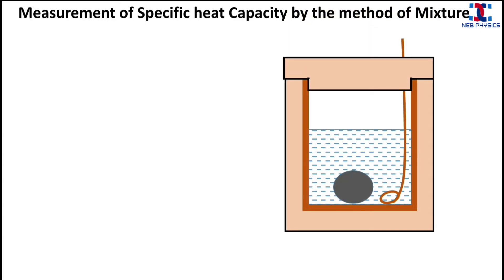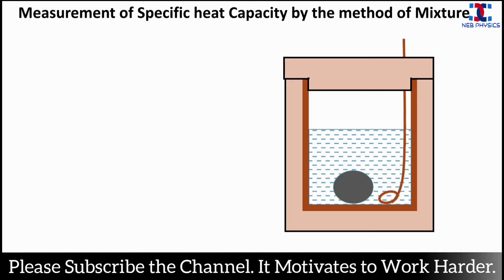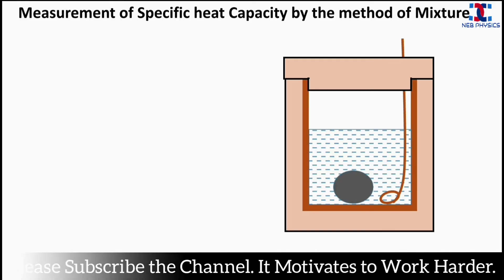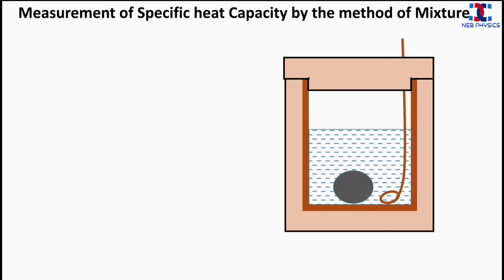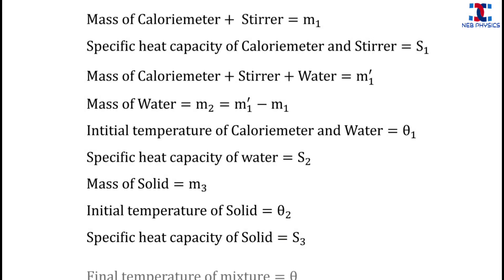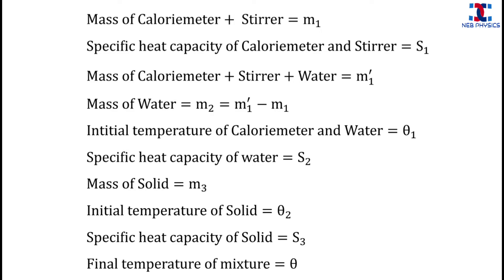After heating the solid to temperature theta2, we quickly transfer it into the calorimeter. Then we stir the water with the stirrer so that there is proper exchange of heat between the solid and the water and calorimeter. Finally, we measure the final temperature of the mixture and call it theta.